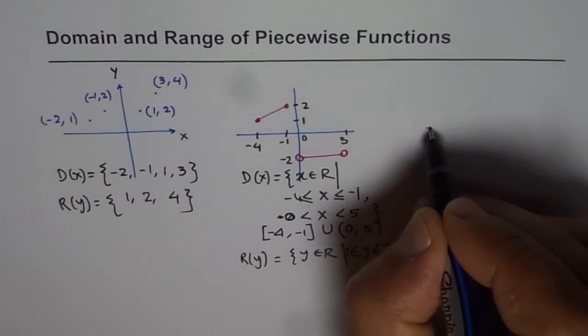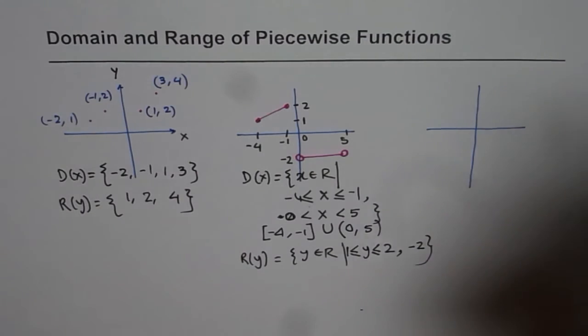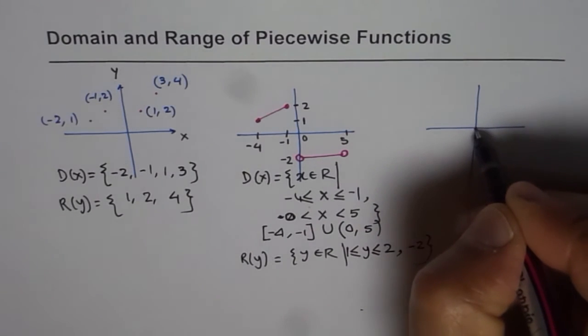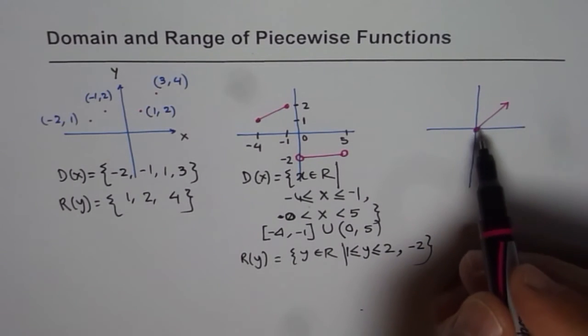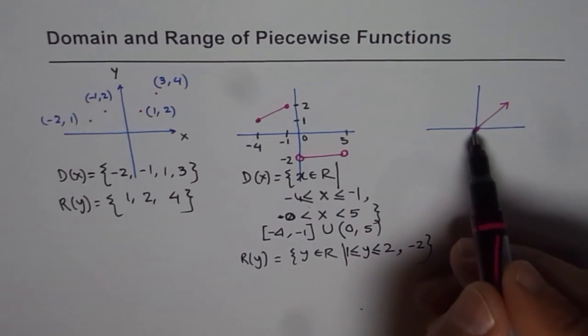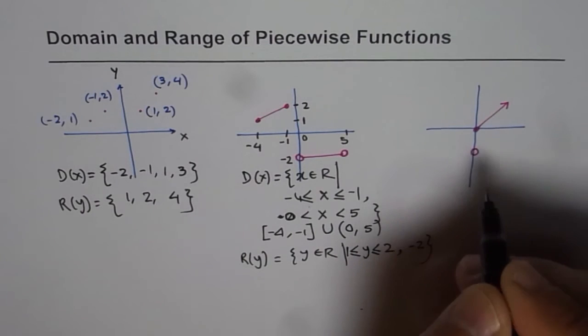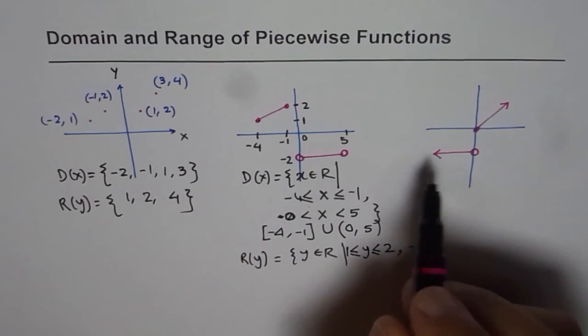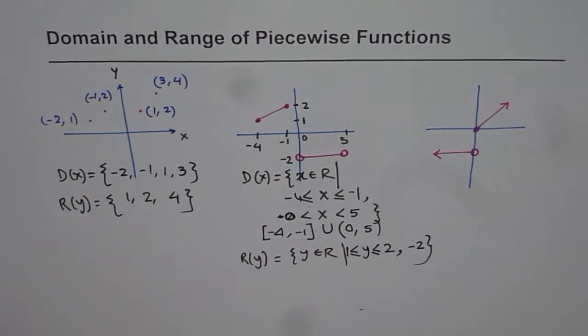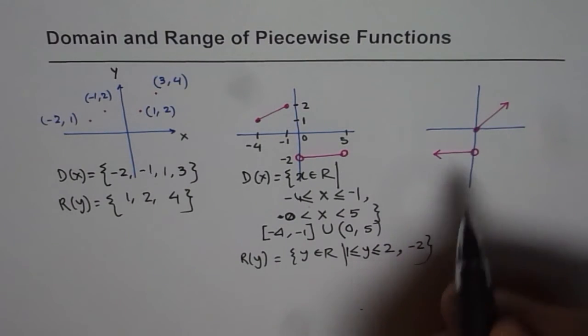Let's take one more example here. In this case, I will take a function which is kind of like this. This point is included, going like this. That means all the x values greater than or equal to 0 are included. Now here this value is not included, but it goes kind of like this. Now in this case, we find that the function is discontinuous, but all x values are included.